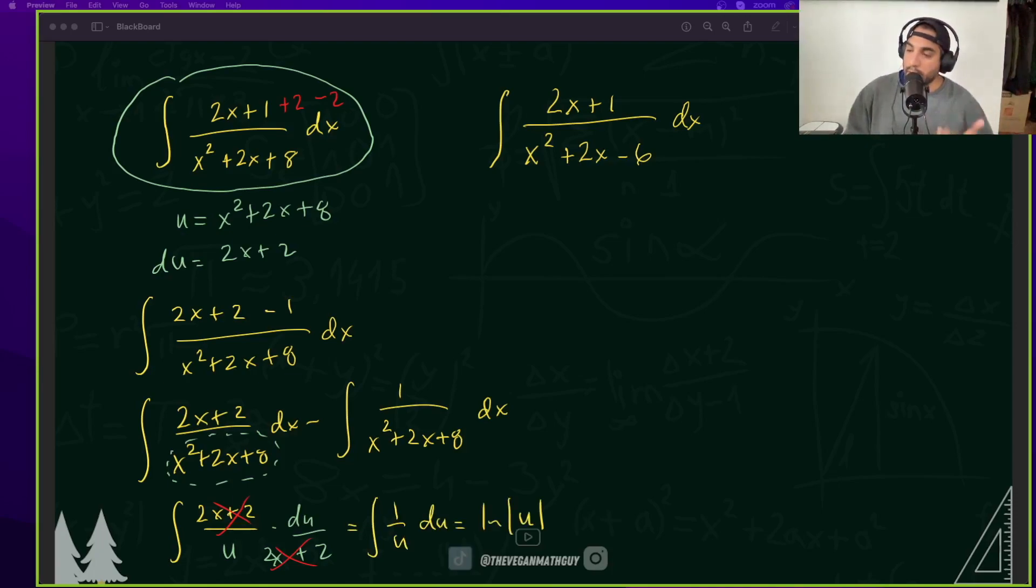So that's just going to be the integral of 1 over u, which is natural log of u. I'm just going to move stuff here, and now I'll rewrite it.